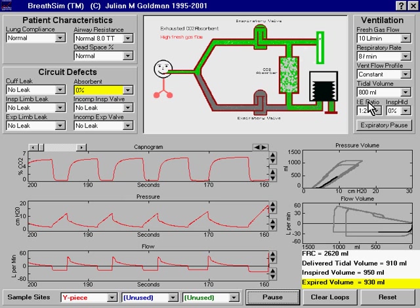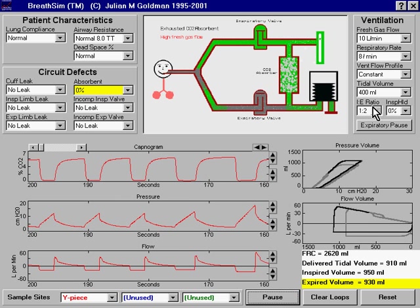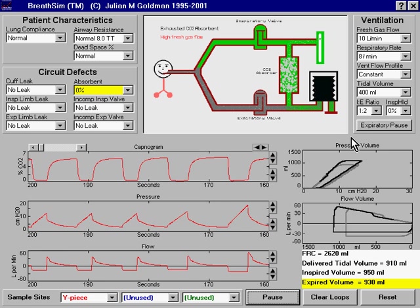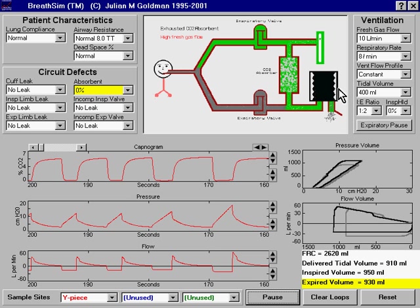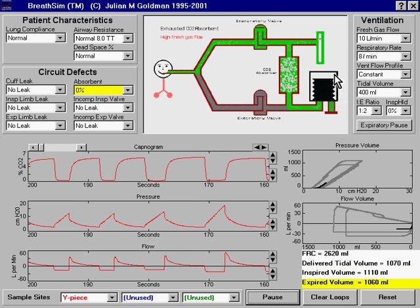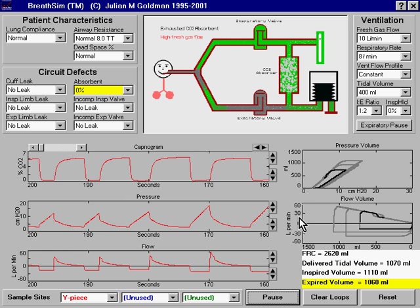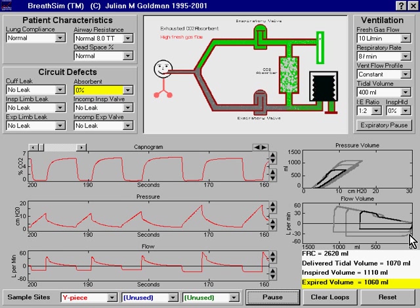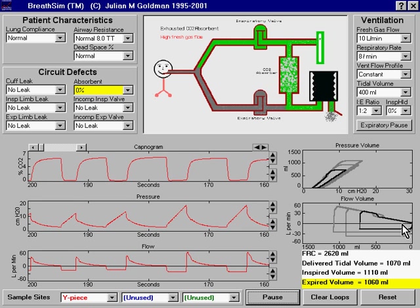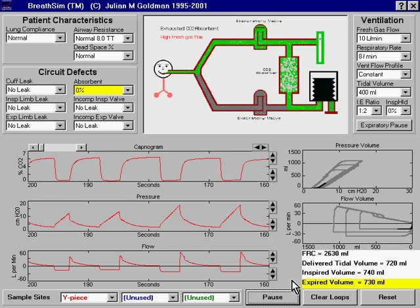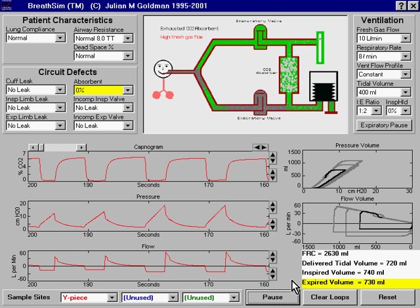The change in set tidal volume will not be reflected in the movement of the ventilator bellows in this animation. The bellows will still move all the way down. However, we can see that we are producing a smaller delivered tidal volume. You can see that here on the flow volume loop. And also the expired volume will now show the change. And there it is. The expired volume is 730 milliliters.